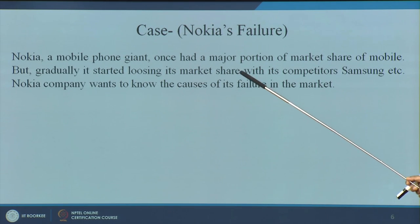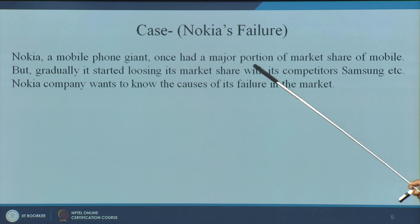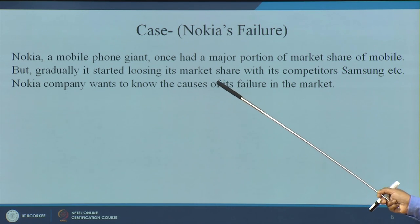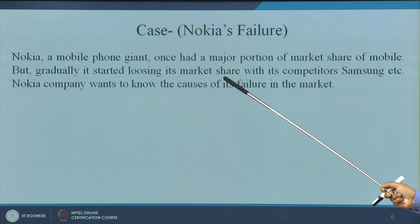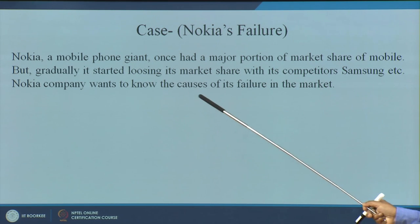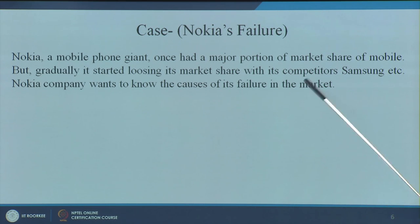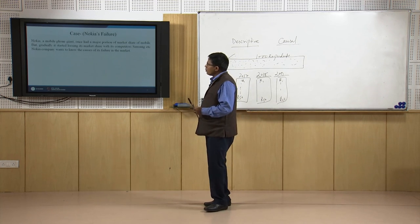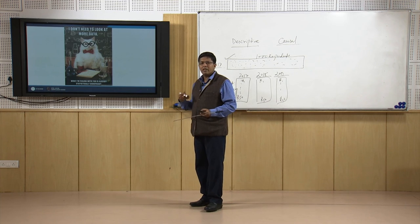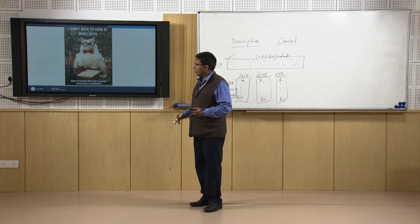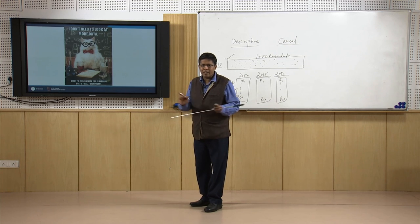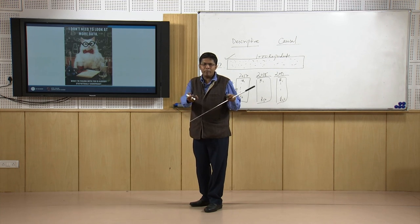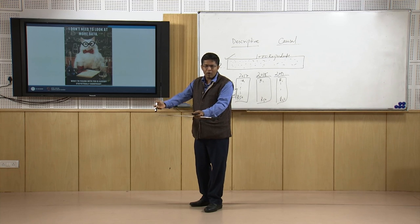Another example: Nokia, a mobile phone giant with a major market share, gradually started losing market share due to battery problems and competition from Samsung and others. Nokia wanted to know the major reasons it failed. To do this, they would conduct descriptive research to understand how particular parameters — which they already had some idea about — were affecting their fall in sales.